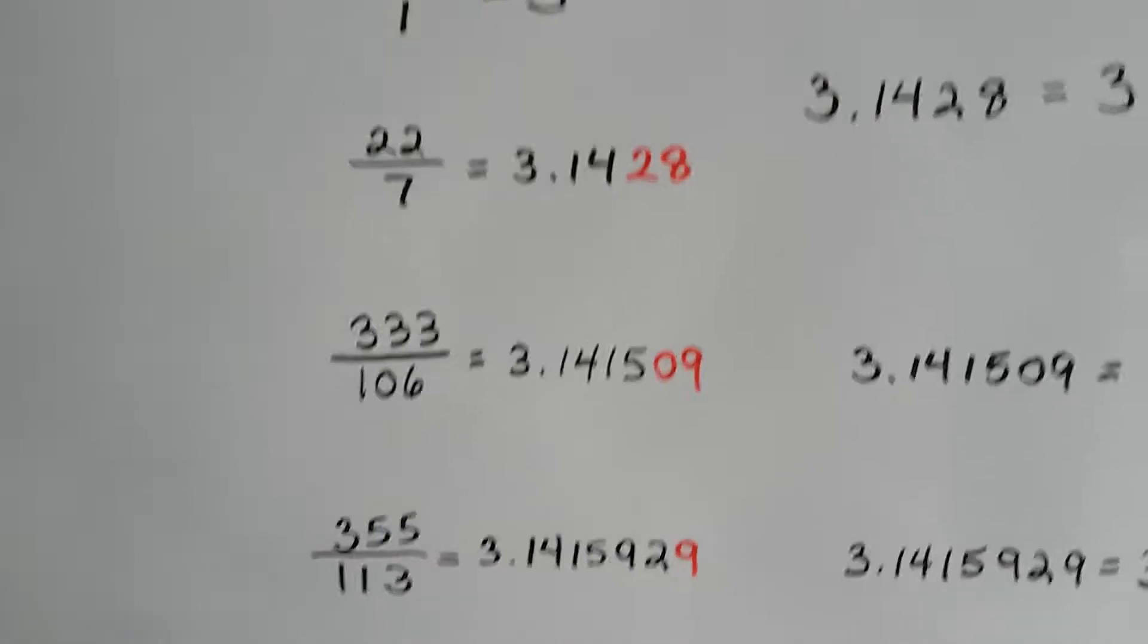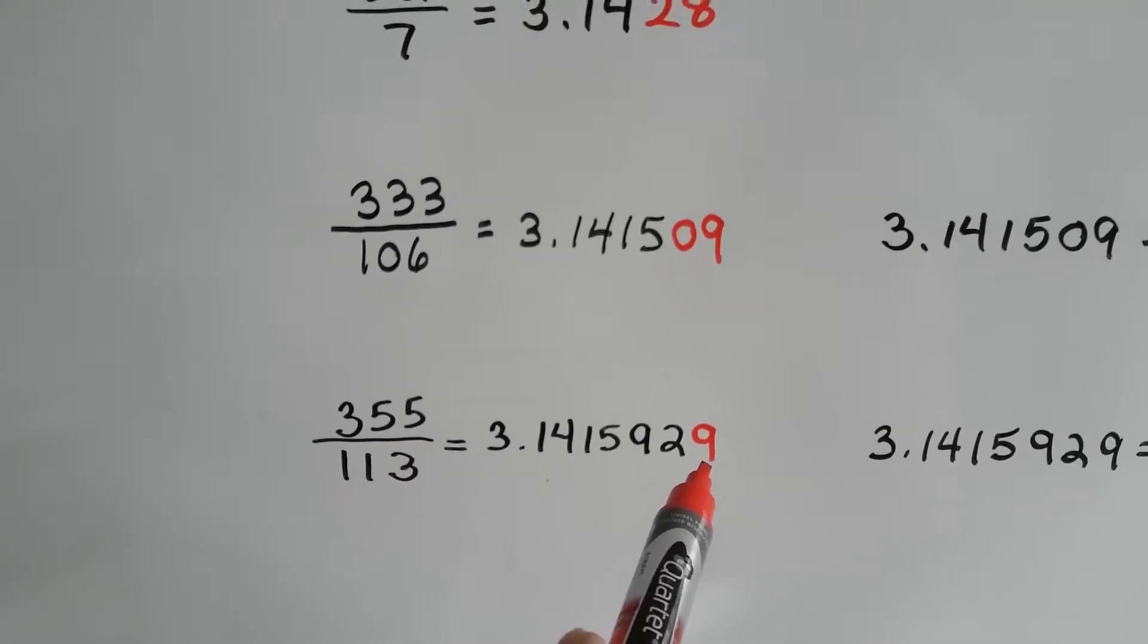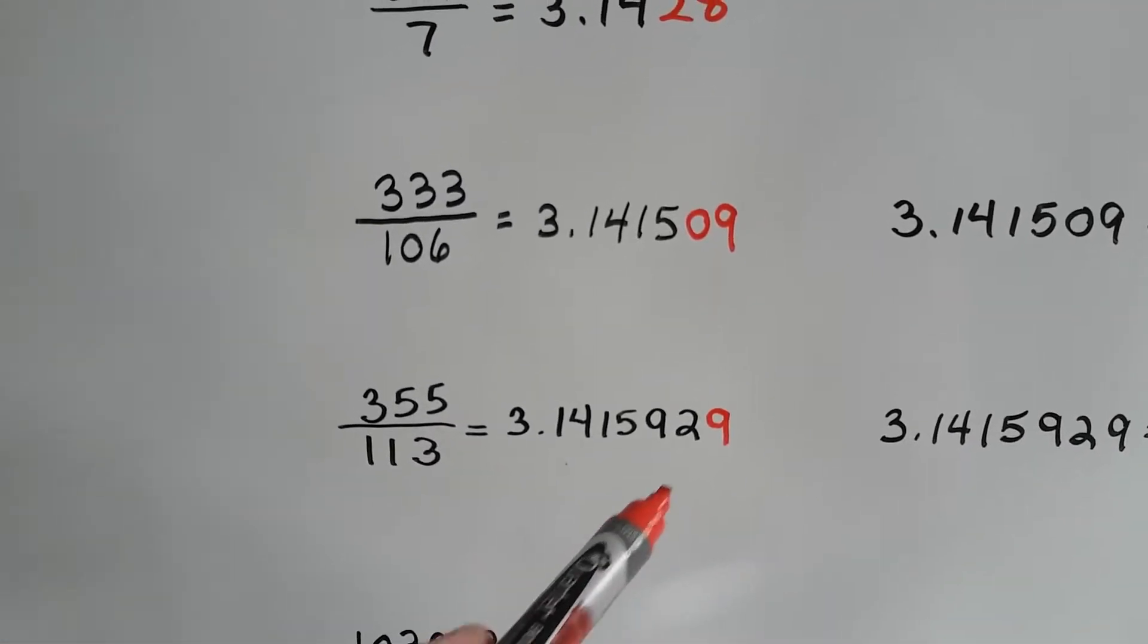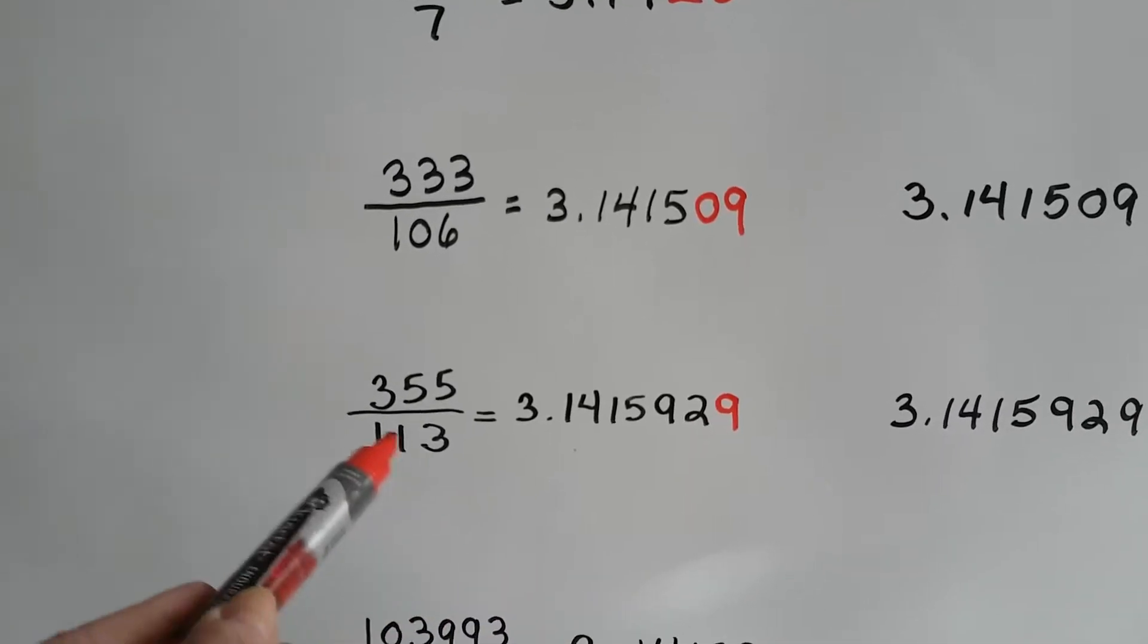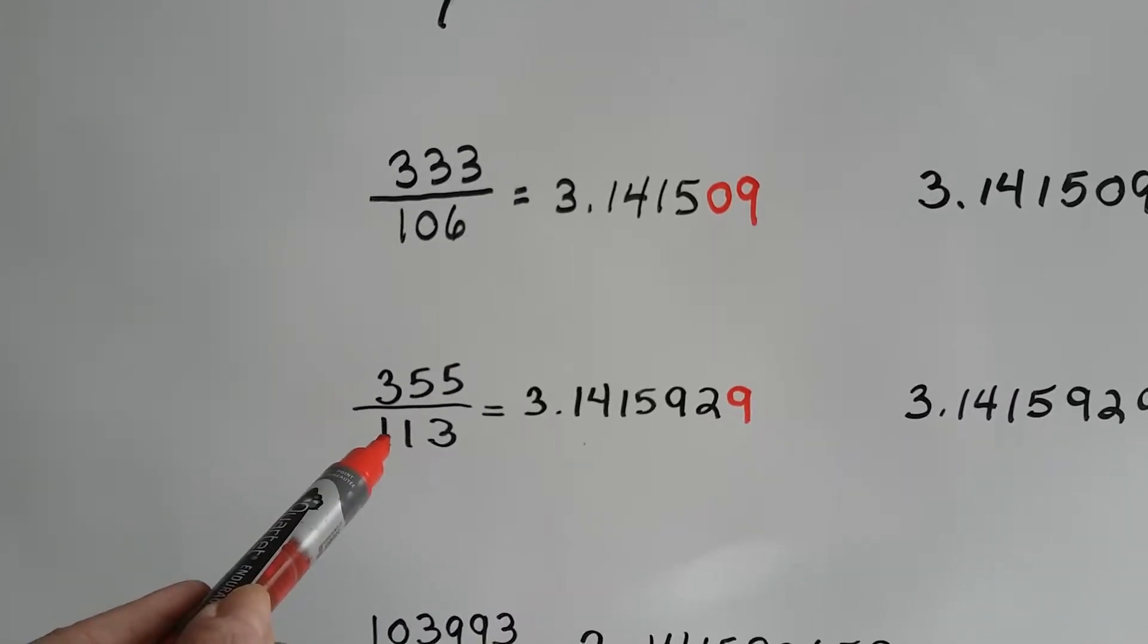And then, a 5. So, that 9 is not exact like pi. Plus, pi continues on. And, they're just stopping here and making that a 9 to get the 355 over 113.